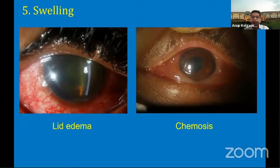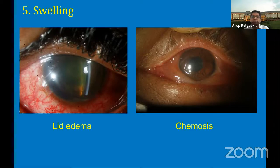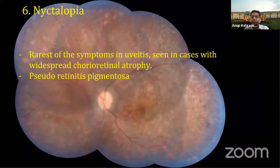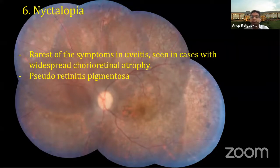Swelling can occur either as lid edema, which may be part of endophthalmitis whether post-traumatic, post-cataract, or endogenous, and chemosis of various grades can be seen. A very rare symptom in uveitis, especially in cases of widespread chorioretinal atrophy or a pseudoretinitis pigmentosa-like picture, is nyctalopia. It is the rarest of symptoms, but it does exist.